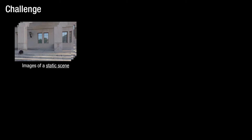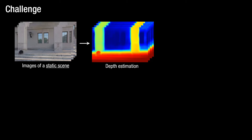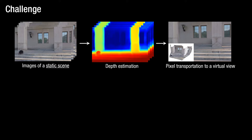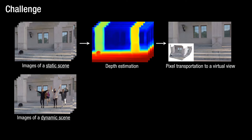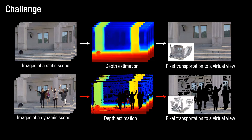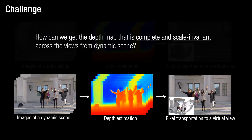From static scenes, the general pipeline of novel view synthesis is composed of two steps: first, depth estimation from multi-view images; second, transporting the pixels from source views to virtual views through the reconstructed geometry. The depth estimation will fail, and this incompleteness will be propagated into the novel view synthesis. The main research question is: how can we get a depth map that is complete and still scale invariant across the views from dynamic scenes?